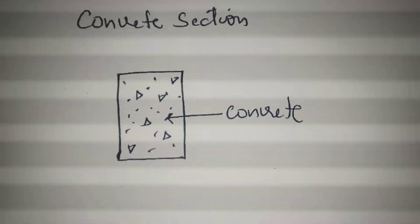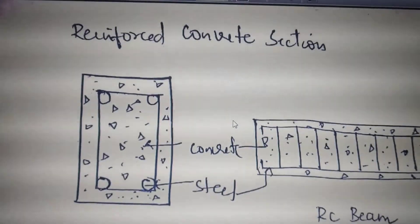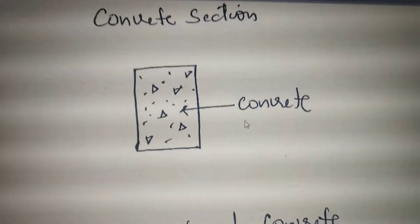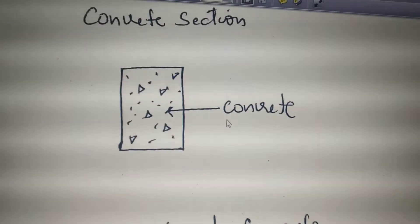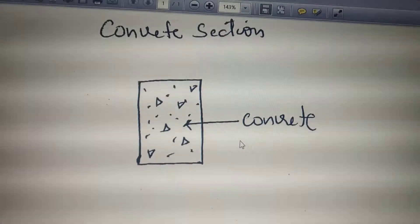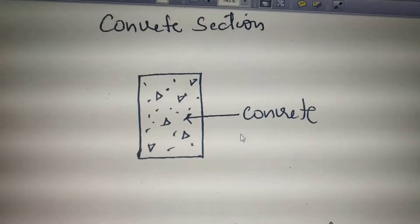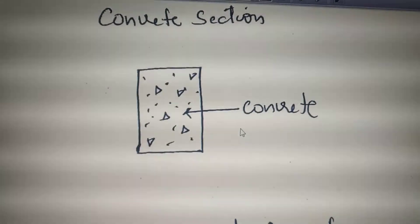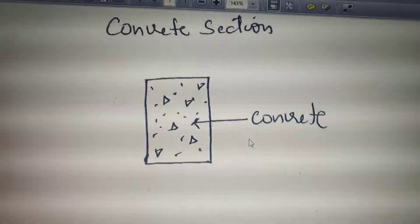To improve the ductile property of the concrete, steel material was introduced into the concrete section. Steel is a very strong material which can resist any amount of tensile stresses, thereby the weak property of the concrete section was increased with the provision of the steel member.